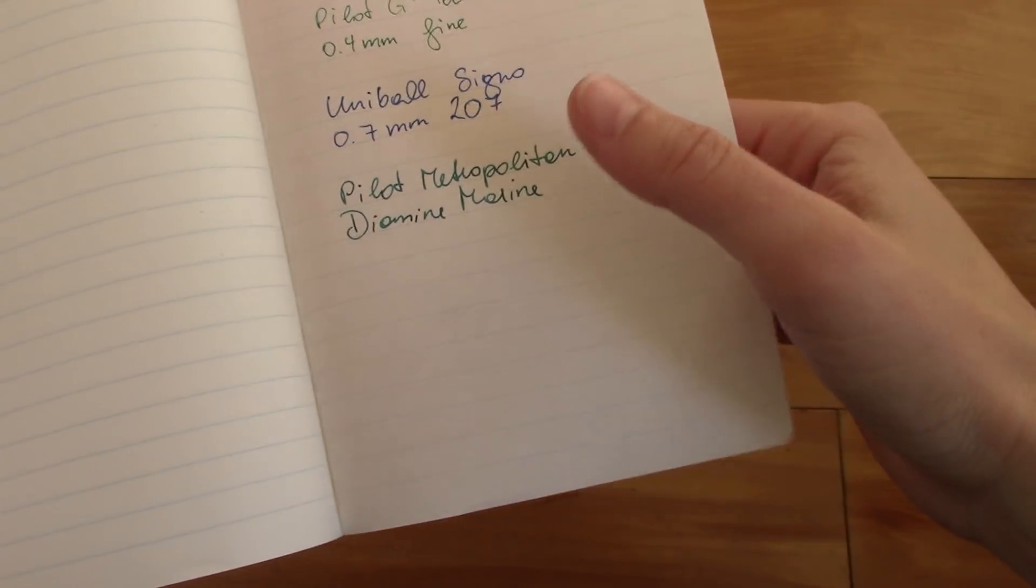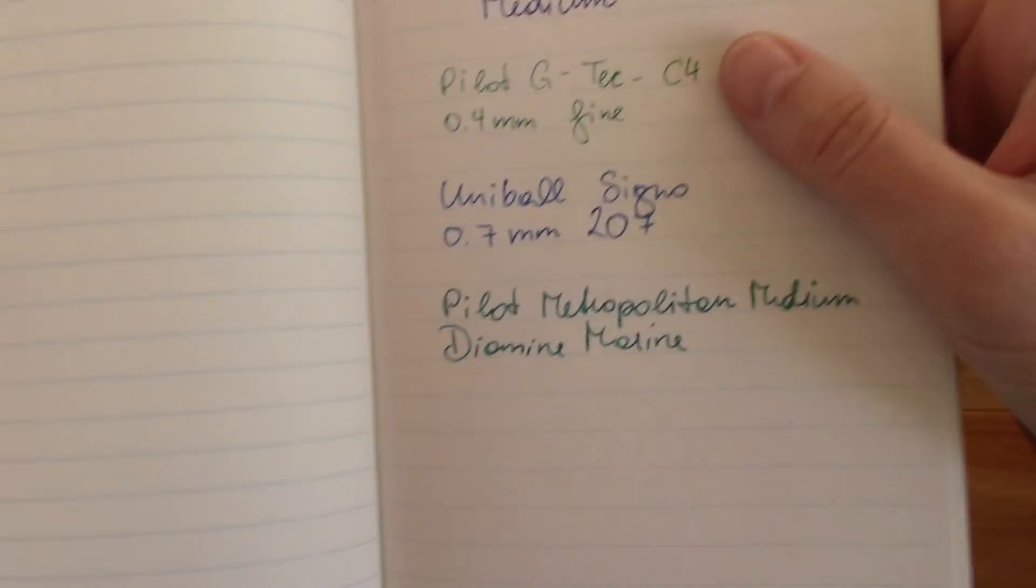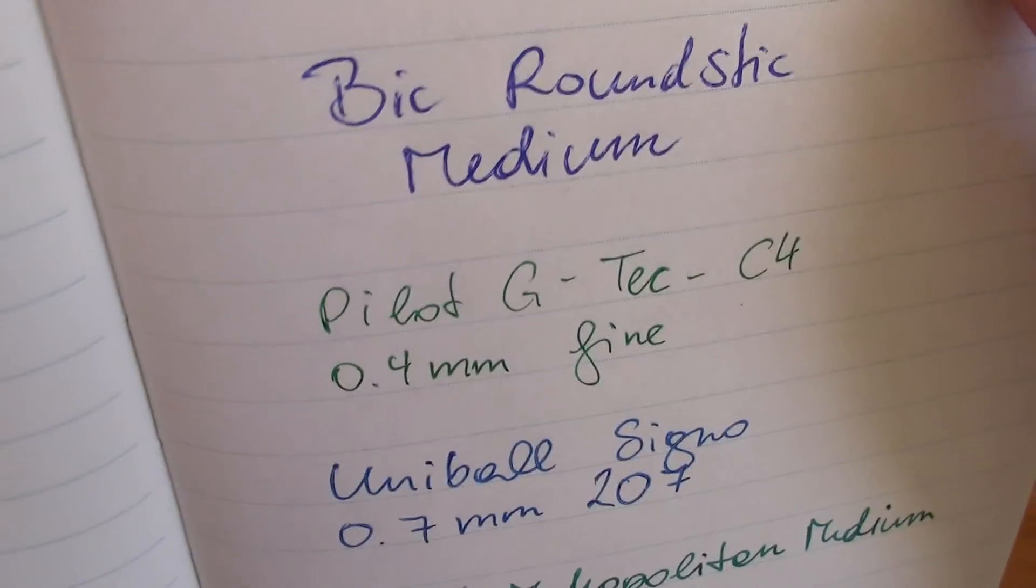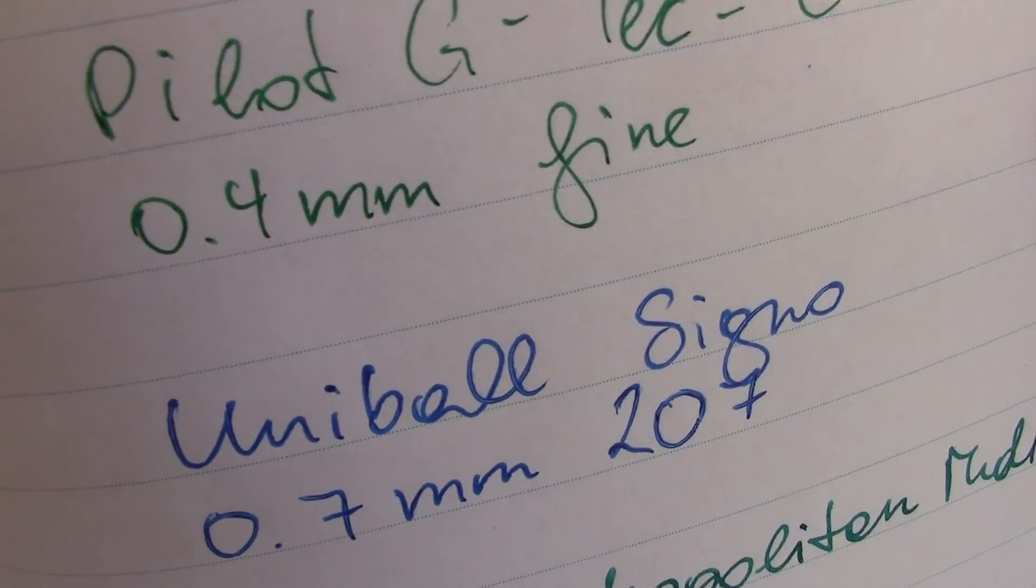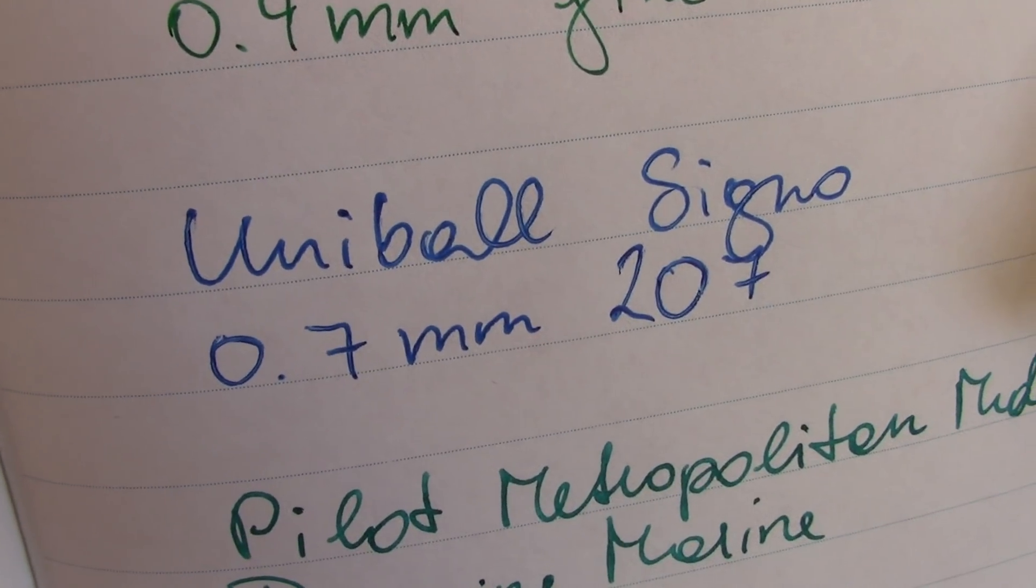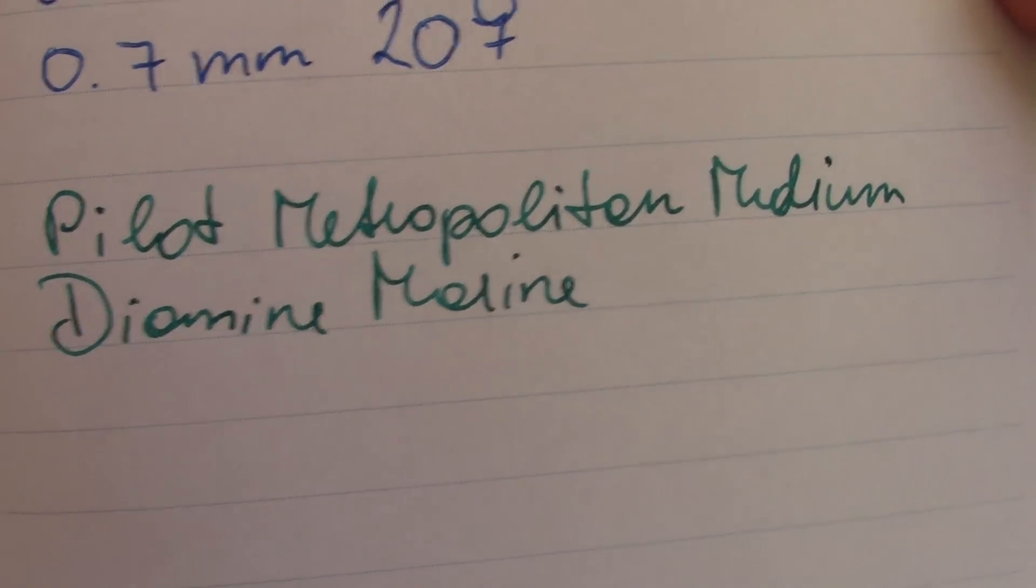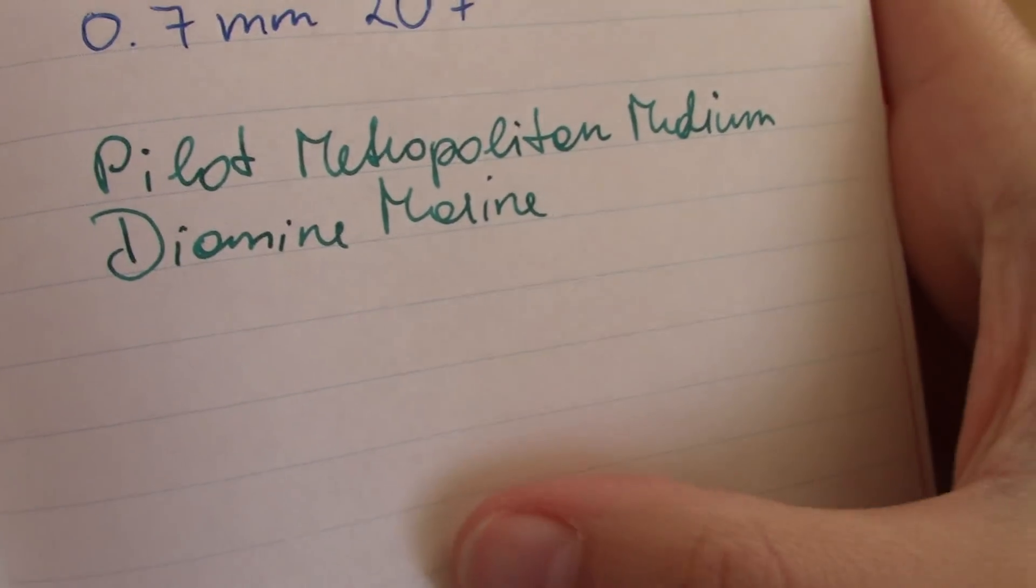And here is my writing sample. So we have pencil, ballpoint pen, 0.4 millimeter gel pen, 0.7 millimeter gel pen. And then we have the Pilot Metropolitan medium nib with Diamine Marine ink.